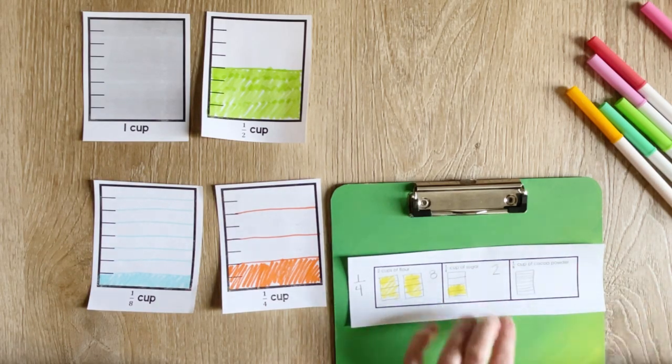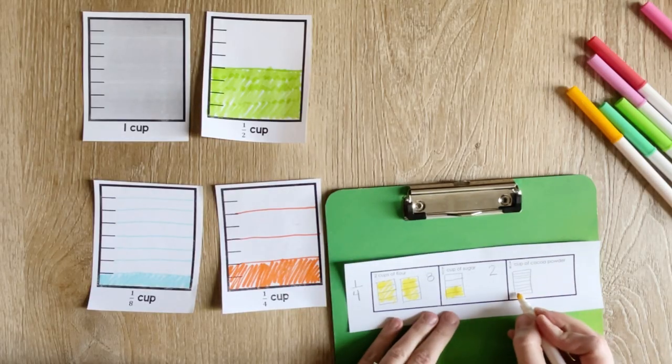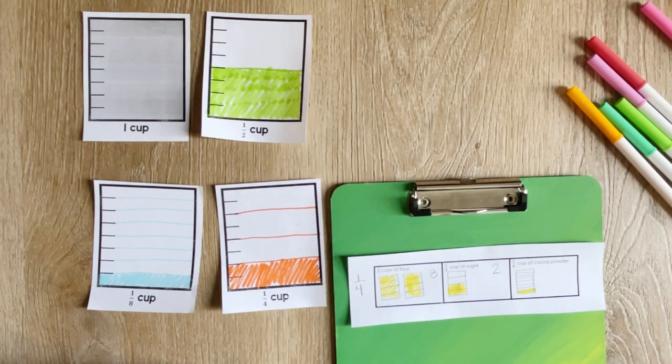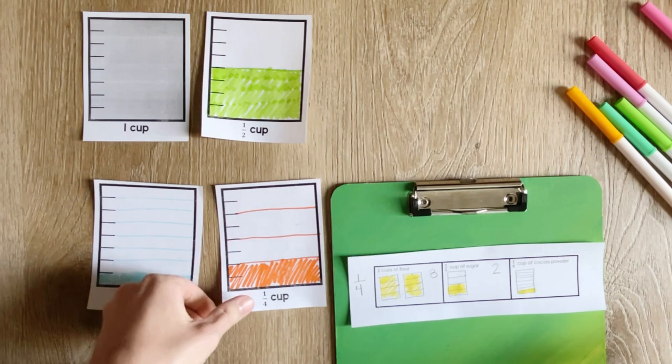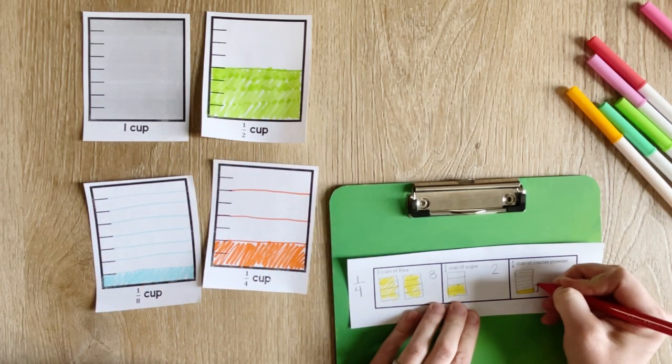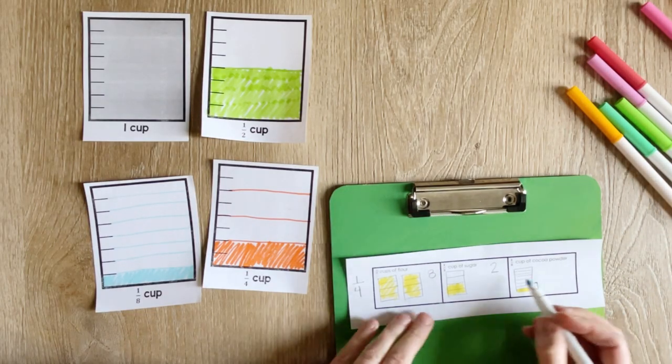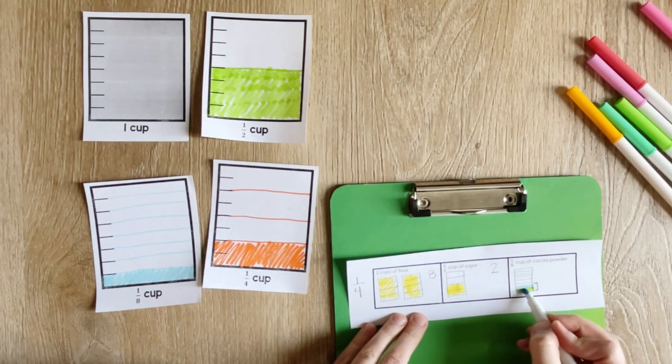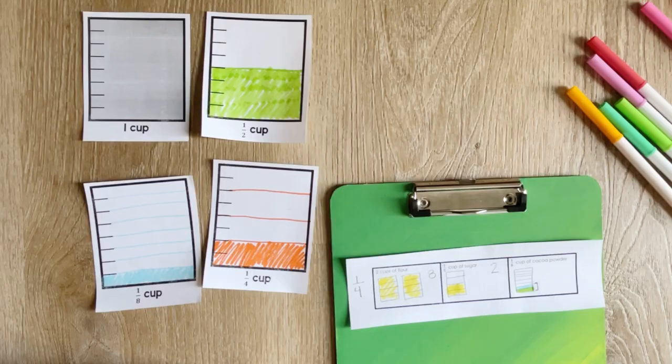If we have a fourth a cup, but we only need an eighth, what we are doing is filling up one-half of our one-fourth cup. Here's the one-fourth cup, and we only need half of that. So our answer here is one-half.